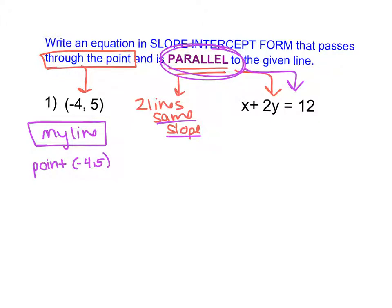To write the equation of a line, I need two things: I need a point and I need a slope. Right now I don't have a slope, but because I understand the pattern that parallel lines have, I know that if I can find the slope of this given line, I can then find the slope of my line, because they are parallel and they have the same slope.